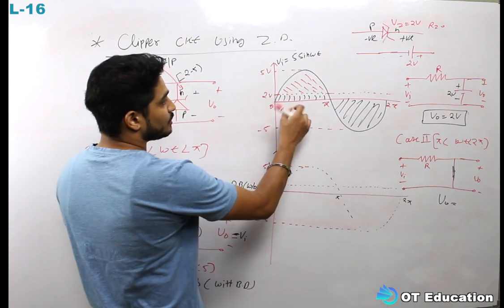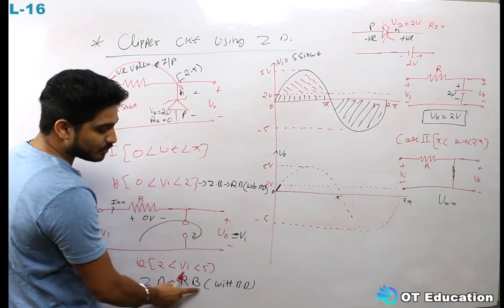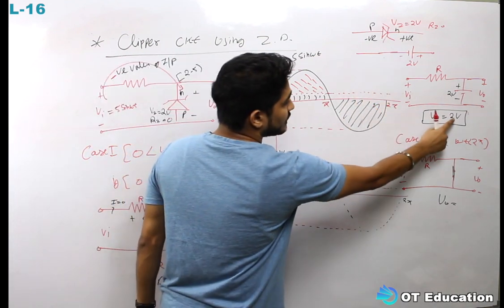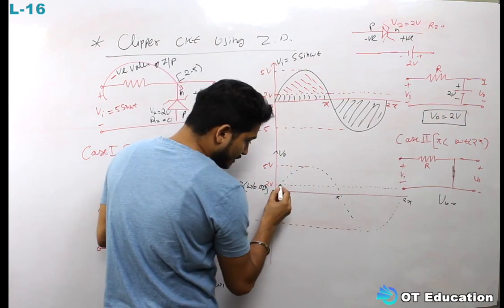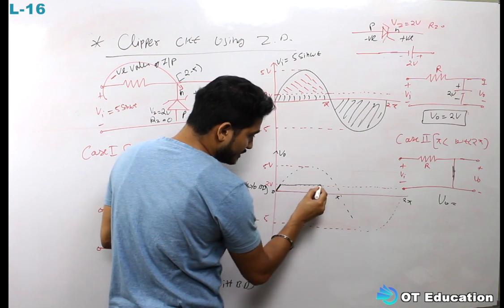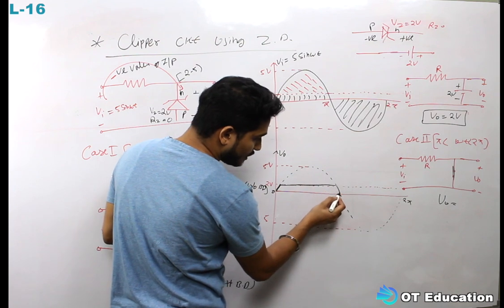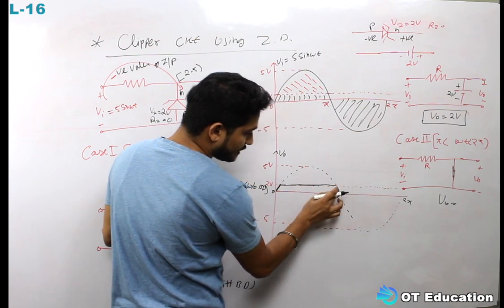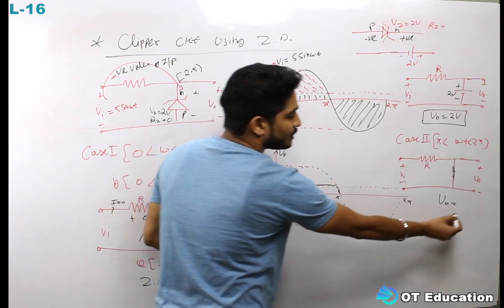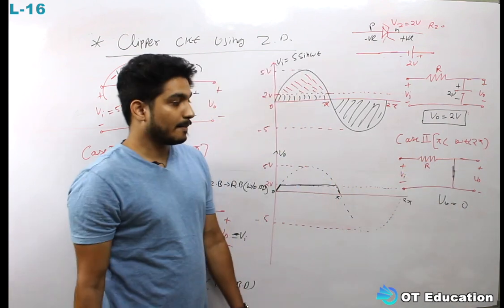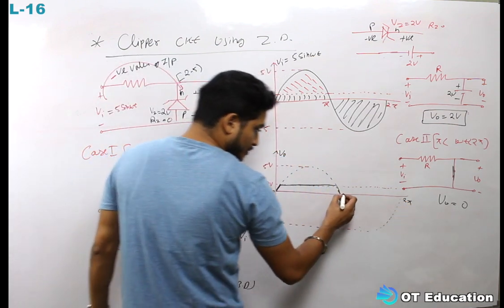So in the 2V to 5V region, the Zener diode is in reverse bias with breakdown and V_output is 2V. In the 0 to 2V region, input and output follow each other. In the π to 2π region (negative half cycle), the Zener diode is forward biased, output is 0. This is the output waveform of the Zener diode clipper circuit.